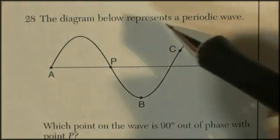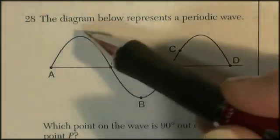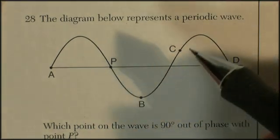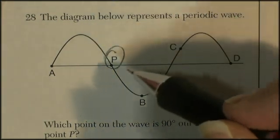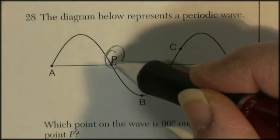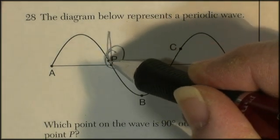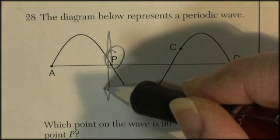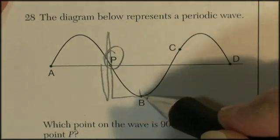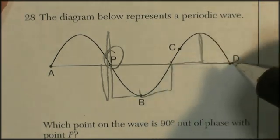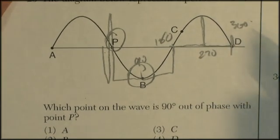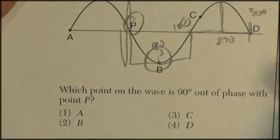Question 28: The diagram represents a periodic wave. Which point on the wave is 90 degrees out of phase with point P? This is based on a circle: 90, 180, 270, 360 degrees - complete circle. There's 90, there's 180, there's 270, and that's 360. They want the point that's 90 degrees, so I'm going with B.